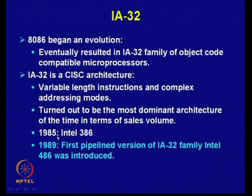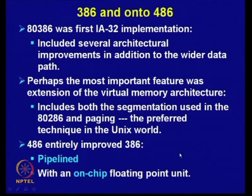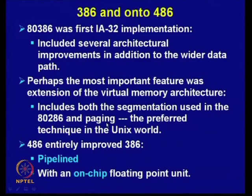As already mentioned, Intel 386 was introduced in 1985. The most important feature of the 386 was the extension of virtual memory architecture — it includes both segmentation used in the 80286 and paging, the preferred technique of the UNIX world. In 80486, it used pipelining with an on-chip floating point unit — previously in the 386, the floating point unit was external, but in the 486 it was put inside.